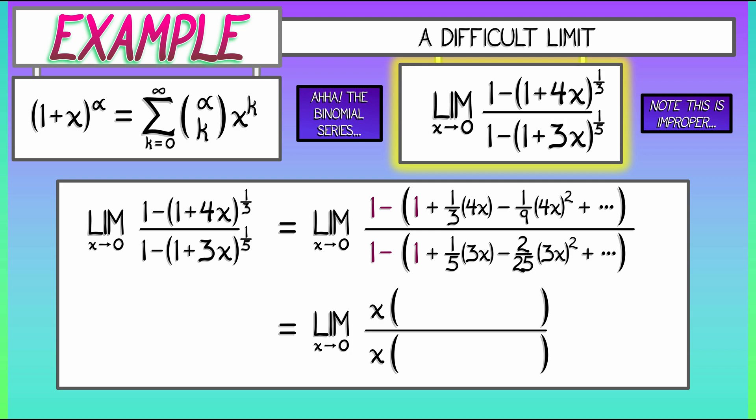We have, in the numerator, negative four-thirds plus 16-ninths times x, and then a lot of other terms, all of which have higher and higher powers in x. In the denominator, what remains, after factoring out an x, is negative three-fifths plus 18 over 25 times x, and then higher order terms.